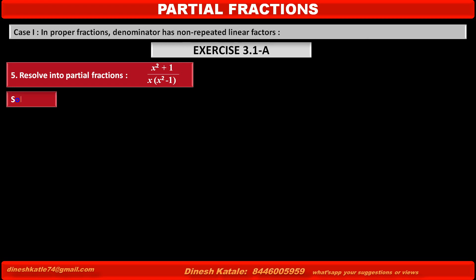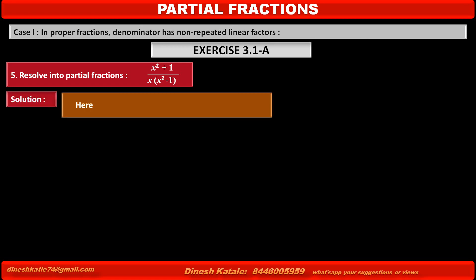Solution. In the given fraction x squared plus 1 upon x into x squared minus 1, the denominator has factors x and x squared minus 1, where x squared minus 1 again factorizes into two parts: x minus 1 and x plus 1. So it equals x squared plus 1 upon x into x minus 1 into x plus 1.